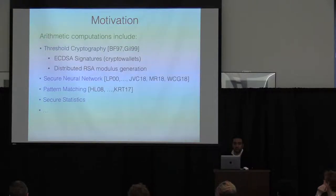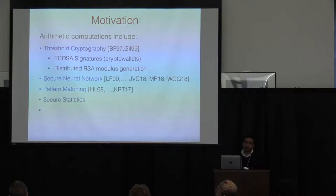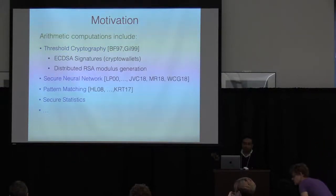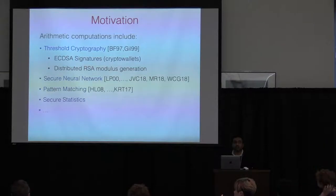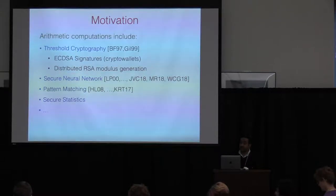Just one slide about motivation. A lot of things that we care about can be expressed as an arithmetic circuit. A lot of threshold cryptography relevant to the blockchain space can be expressed as an arithmetic circuit. Neural network computations — basically matrix multiplications over some integer space — can also be expressed this way. Pattern matching, statistics, and set intersection also fall under this category.